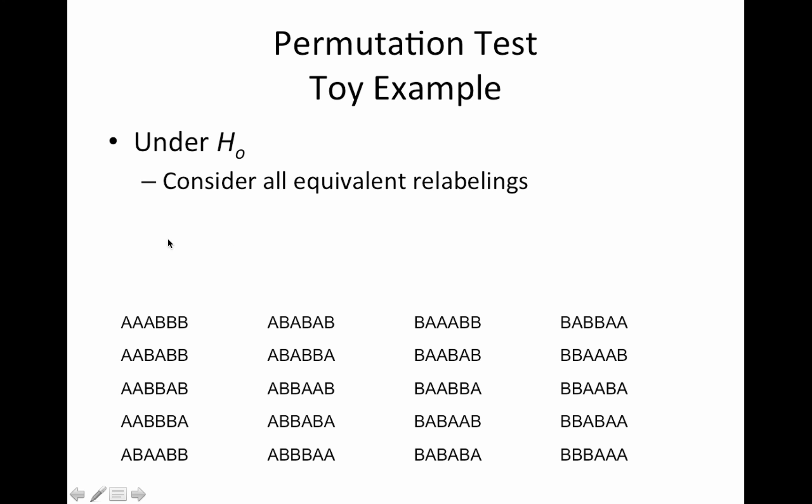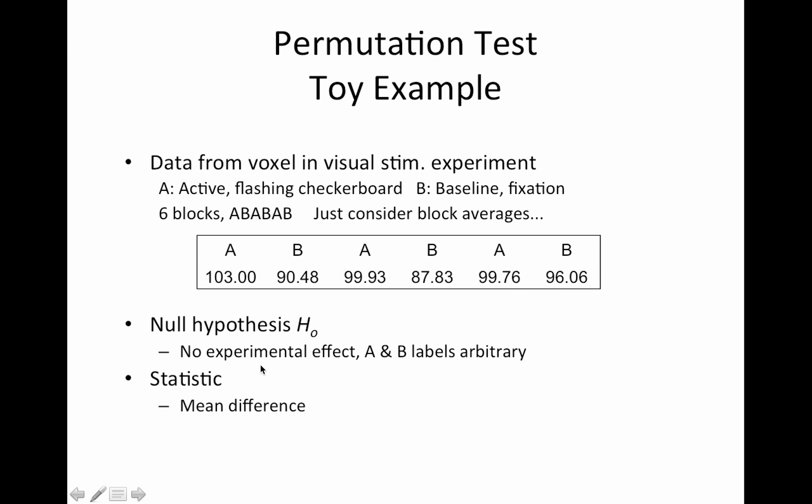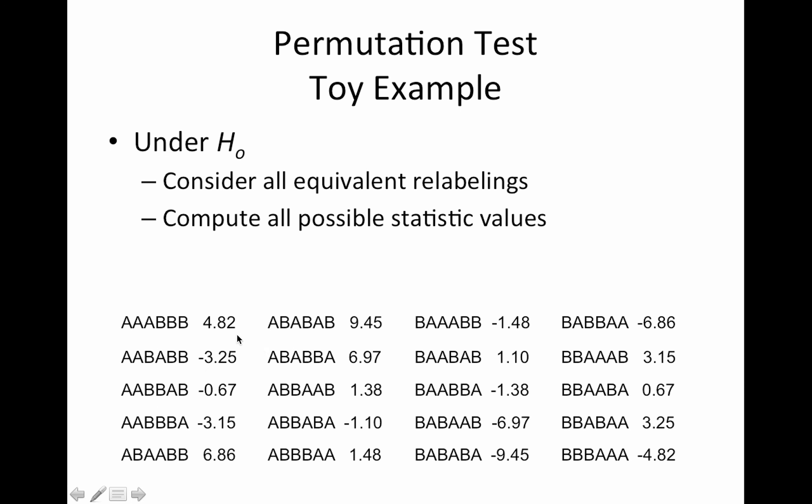So you get something like this. So we do all the equivalent relabelings. So since we have six things with two possible labels we have a total of 20 orderings, and then for each of these orderings we compute the statistic. So that's what these are. So same data that were on the previous slide, let's just shuffle the labels and recompute your statistic. In this case the statistic is the mean difference and you get all of these.